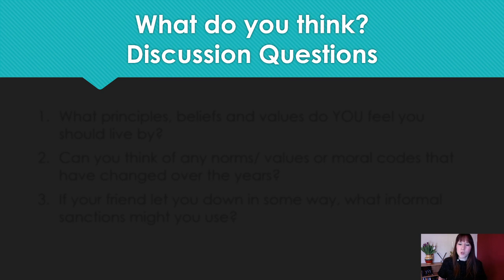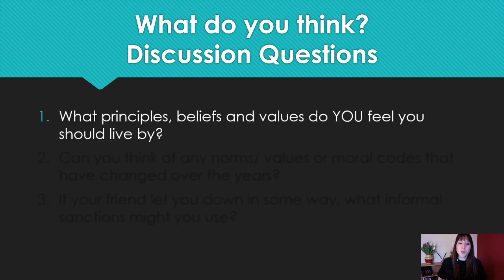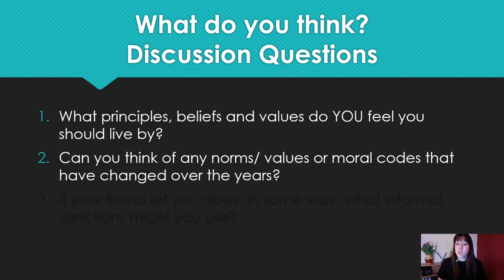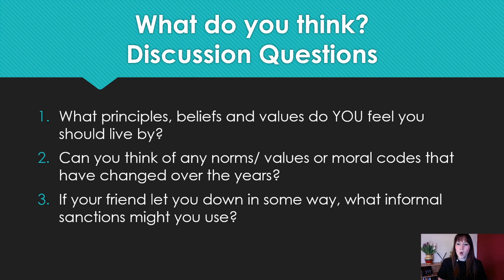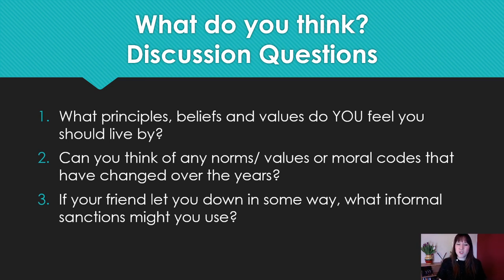Some discussion questions for you. What principles, beliefs, and values do you feel you should live by? Can you think of any norms, values, or moral codes that have changed over the years? And if your friend let you down in some way, what informal sanctions might you use? I'm going to pop them on the padlet because I'd love to hear your thoughts. For me, if my friend lets me down, I'm a festerer — it festers. I wish I was one of those people that would just go straight in and say, 'Look, you've upset me.' I don't — I fester. So how would you deal with your friend? Would you ignore them? Would you delete their number? Would you tell them?